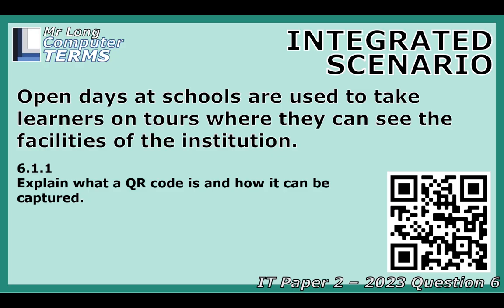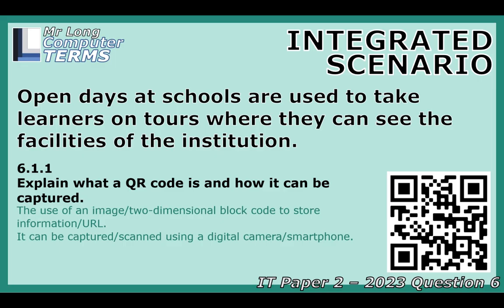First question: what is a QR code and how is it captured? A QR code is basically a 2D barcode — like the regular ones on groceries but way more powerful. It holds more data, like a web address. Capturing it is super simple: just point your phone's camera at it. The camera app reads the pattern, or you can use a dedicated QR app. It sees the black and white squares, decodes them, and it's usually a link — in this case, probably to an online sign-up form.